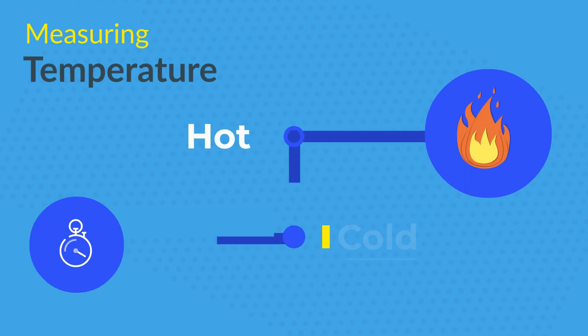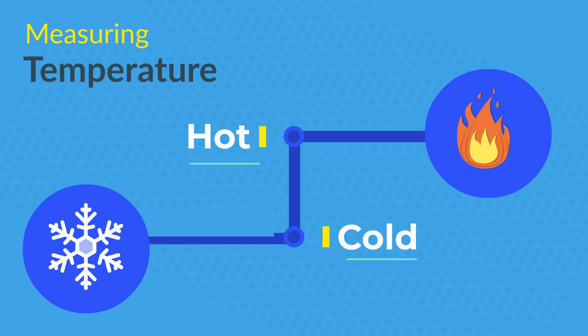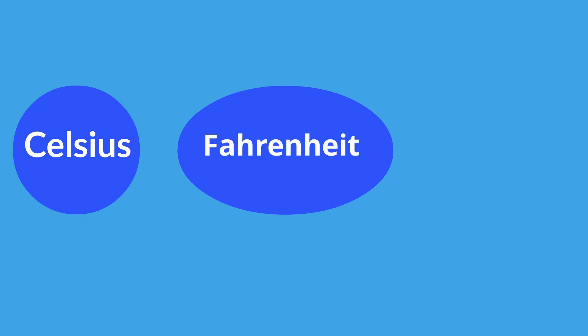Temperature measures how hot or cold an object is by taking the average of the heat energy. It can be measured in degrees Celsius, Fahrenheit, and Kelvin.